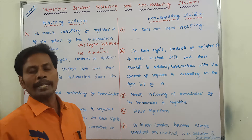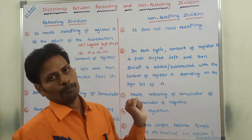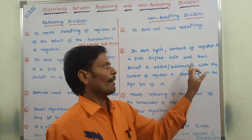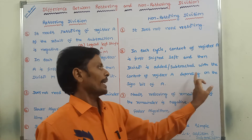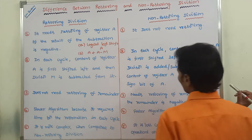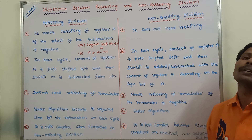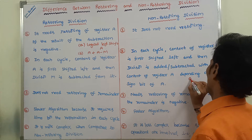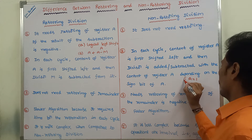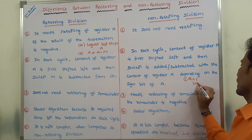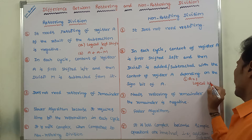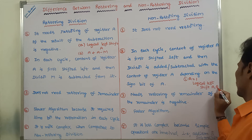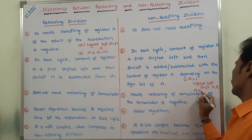In the case of non-restoring division algorithm, in each cycle, the content of register A is first shifted left and then divider M is added or subtracted depending on the sign bit of A. We have to observe the sign bit of register A first. If the sign bit of register A is 1, we have to perform two steps: first, logical left shift on A and Q, and second, A equals A plus M.